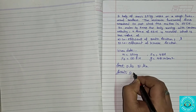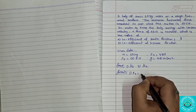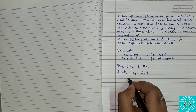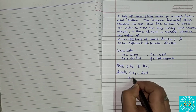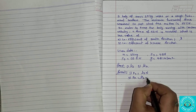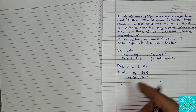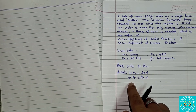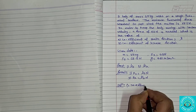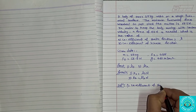We know the formula: Fs = μs × N, where s denotes static friction. And Fk = μk × N, where k denotes kinetic friction.